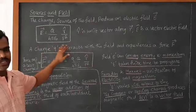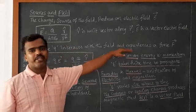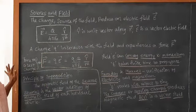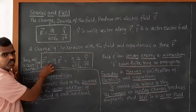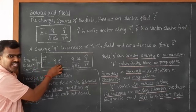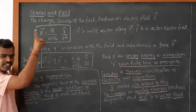So a charge Q which interacts with the electric field and experiences a force F. F is also a vector point. So we can write F vector is equal to Q into E. F vector is equal to Q into E vector. What is this equation? We studied in the first chapters.